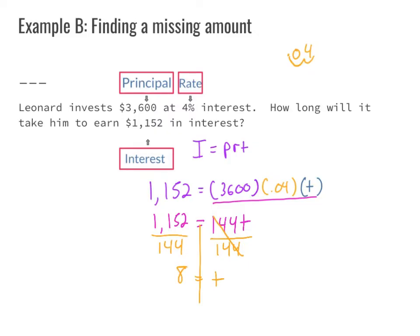Since I have a word problem, I need a word answer: time equals 8 years. Does that make sense? Leonard invests $3,600 at 4% interest — how long will it take him to earn $1,152 in interest? Eight years. That's a long time, but he's only earning 4% interest.